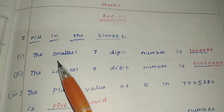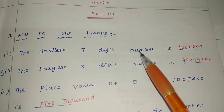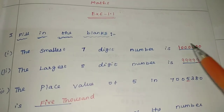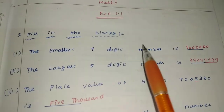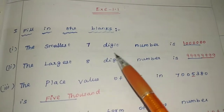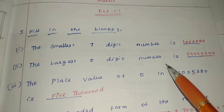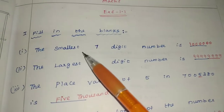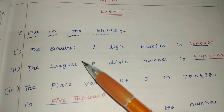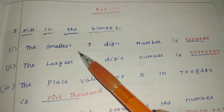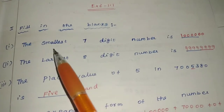You can see the first one: the smallest 7-digit number is dash. I am going to talk about the smallest 7-digit number. Next part is the largest 8-digit number dash. You can see the smallest and largest number in previous videos, and you will have confusion about which is the smallest and the largest.